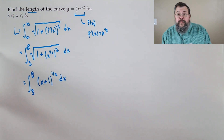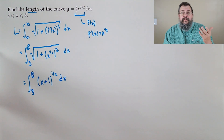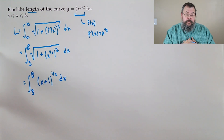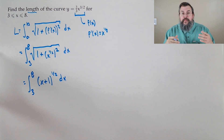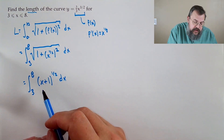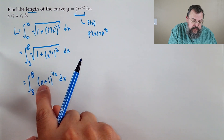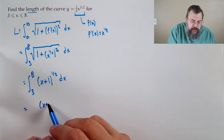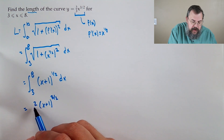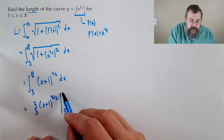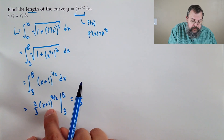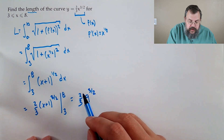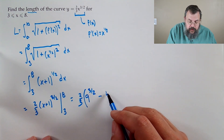This is an integral we can actually do. It's acting like x to the one-half; the plus one is a shift and inconsequential. If you're not comfortable, you can do a substitution u equals x plus one. Otherwise, we add one to the exponent to get x plus one to the three-halves, multiply by two-thirds, and evaluate from three to eight. Plugging in eight: eight plus one is nine, taken to the three-halves power. Plugging in three: three plus one is four, taken to the three-halves power.